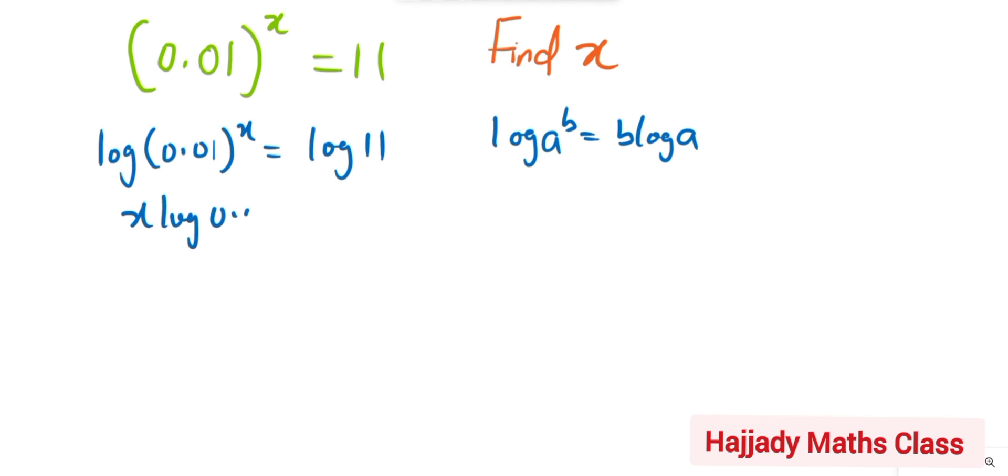In addition to this, we know that 0.01 is the same thing as 1/100, which is the same thing as 10^(-2).